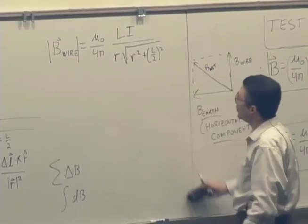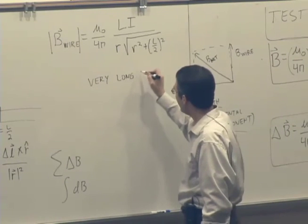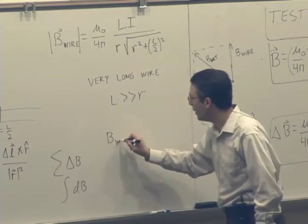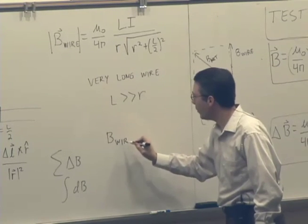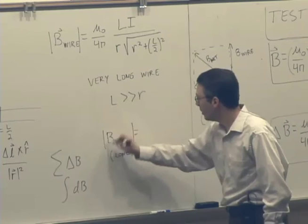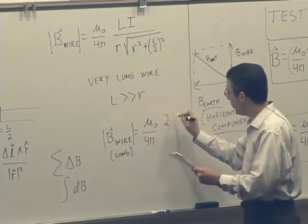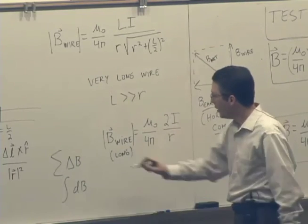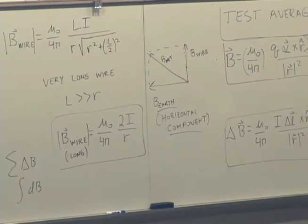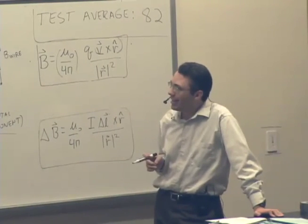One approximation that's useful is when you have a very long wire. L is much bigger than R. If you simplify it, you'll find that the magnetic field of the wire, long wire, is equal to mu naught over 4 pi 2 I over R. So you get a 1 over R distance dependence for a very long, thin wire, just like we got a 1 over R distance dependence for the electric field of a long, thin, charged rod. So the geometry is kind of similar.